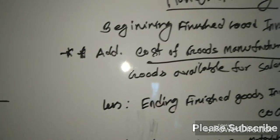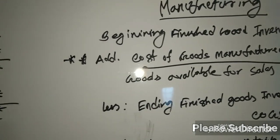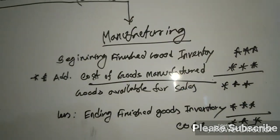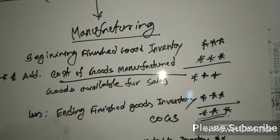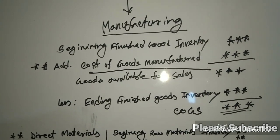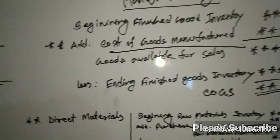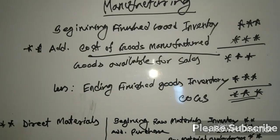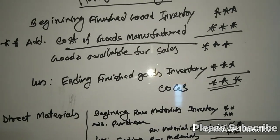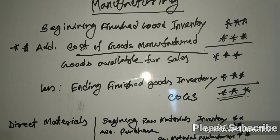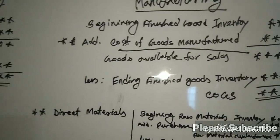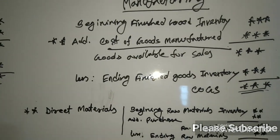For manufacturing: cost of goods manufactured, plus beginning finished goods inventory, equals goods available for sale, less ending finished goods inventory, equals COGS — cost of goods sold. COGS means cost of goods sold. So we will get the cost of goods manufactured, then we will get the cost of goods sold.